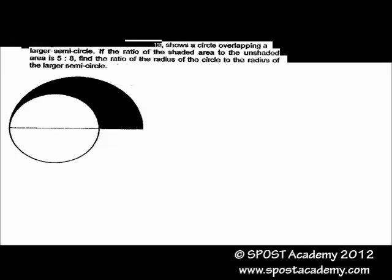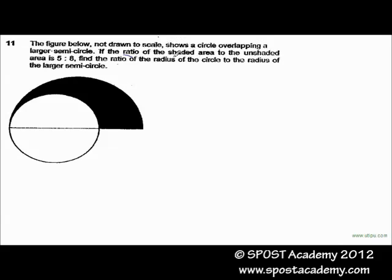We know that the ratio of the shaded area to the unshaded area is 5 to 8, which means that the shaded part is 5 units, while the whole circle is 8 units. And since this is a semicircle, this will be 4 units and 4 units here.